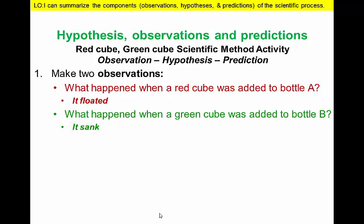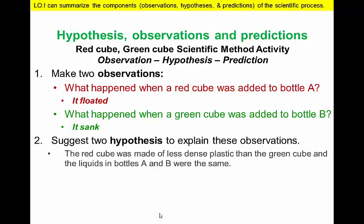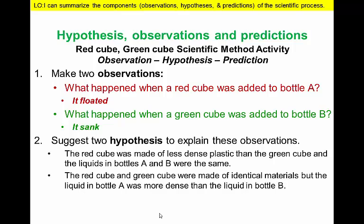But why did that happen? What are two potential hypotheses to explain these observations? First, we might assume that while both cubes were the same size, the plastic that made them up was made of different components. An alternative hypothesis could be that there was no difference between the cubes and that the difference was in the liquid in the bottle.